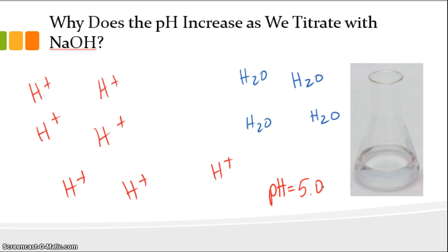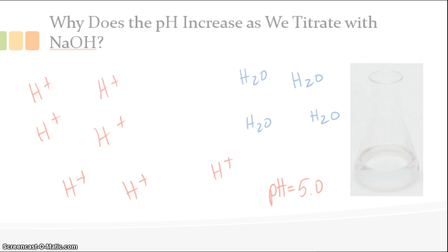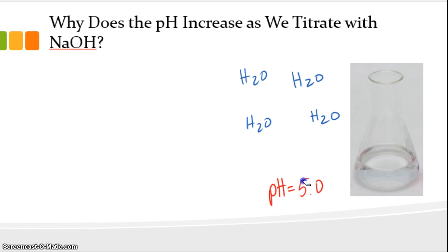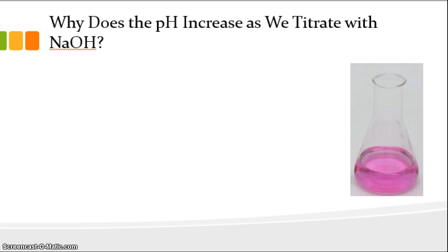We'll continue to neutralize protons by addition of sodium hydroxide. Once our pH gets up to 8.2, our phenolphthalein changes color, because our indicator changes color when our pH reaches 8.2. That's exactly what's happened as we've gone along — the phenolphthalein signals the endpoint.